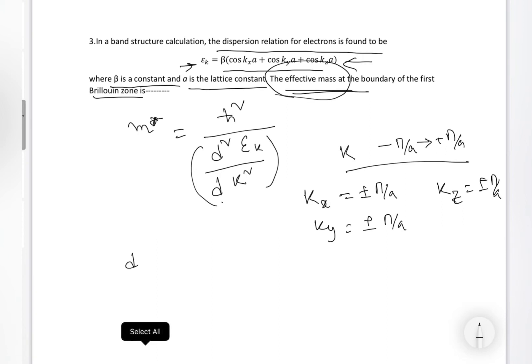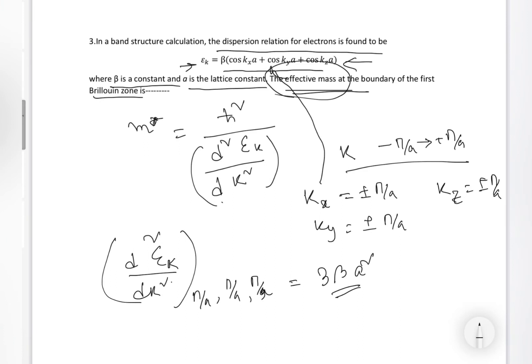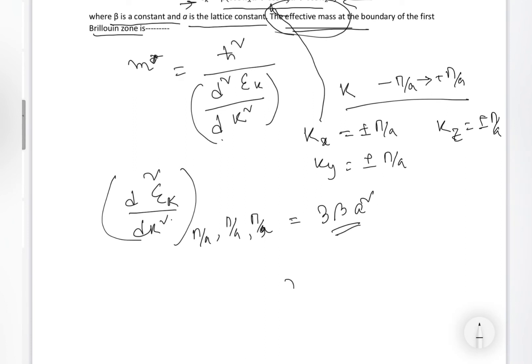Once we write this, what is the d²E(k)/dk² at (π/a, π/a, π/a)? That is in three-dimensional system. If we calculate and put those values in this E(k) equation, I mean we do the double derivative and put it, then we will come up with -βa². Once we get that, we will put that in the m* equation. And easily, we will get m* = -h-bar² / (3βa²).